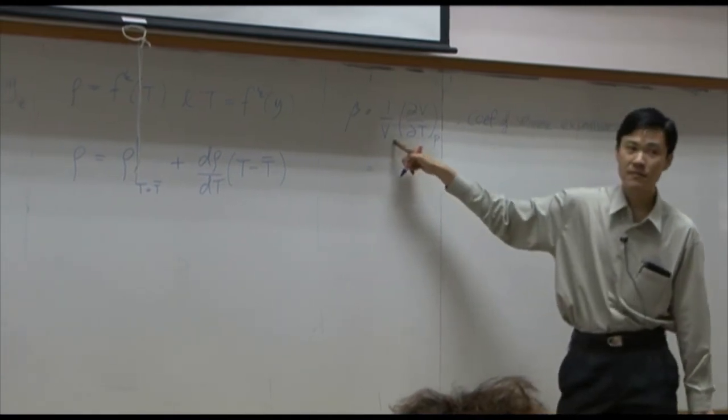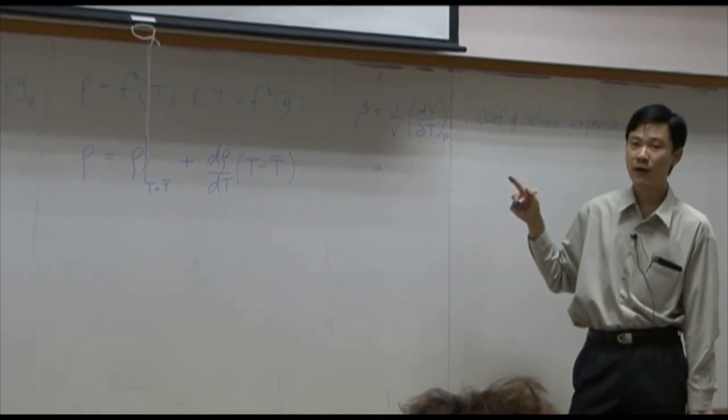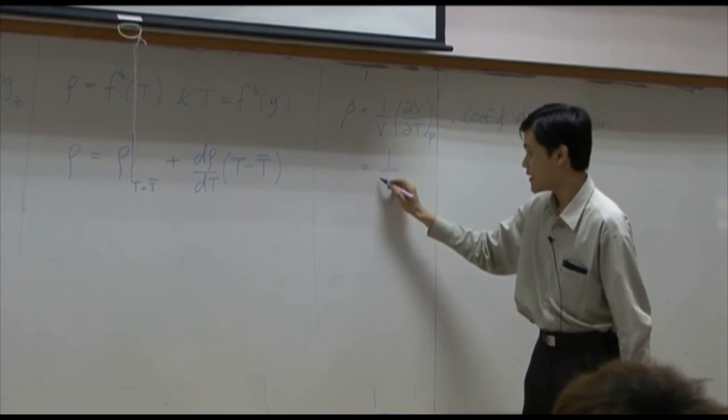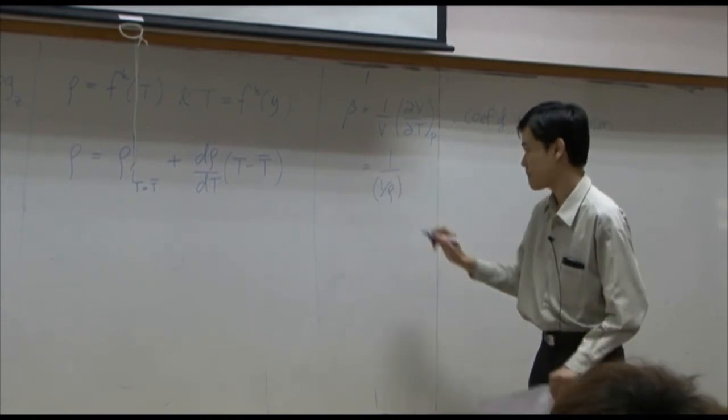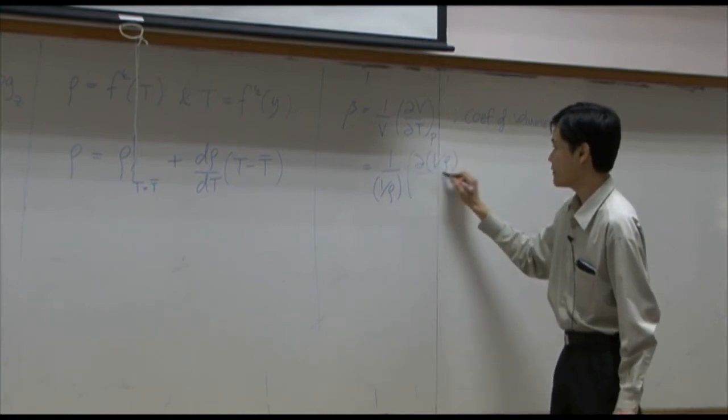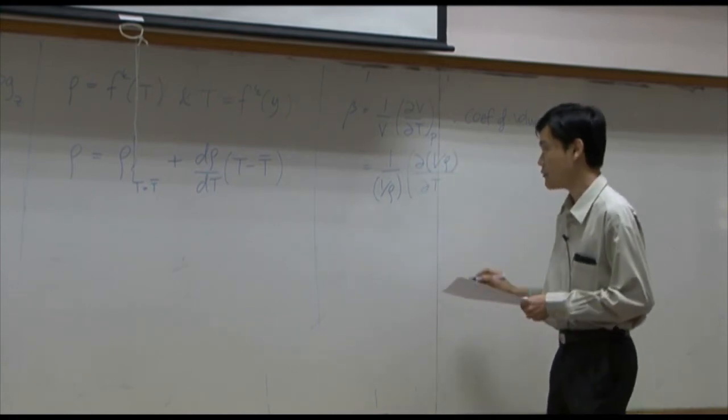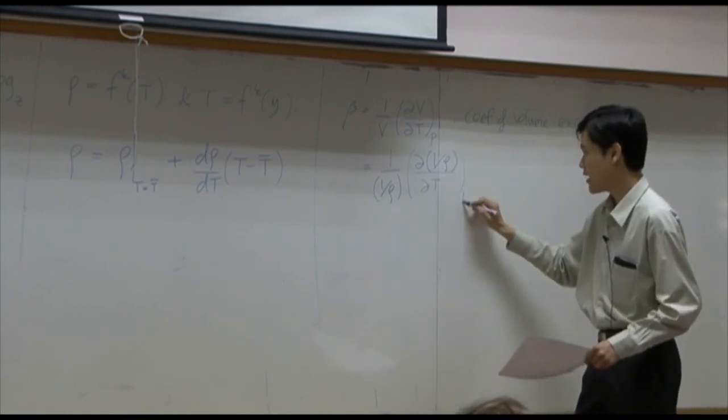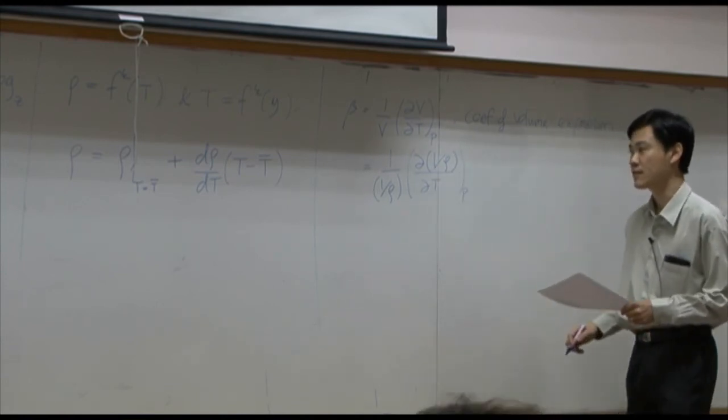It's coefficient of volume expansion. V is specific volume. Specific volume is 1 over density. Again, V here is 1 over density divided by, differentiate with respect to temperature at pressure constant, the constant pressure.